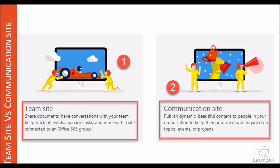Looking at the communication site image, one person is announcing something with achievements shown on screen. This is something you want to share with your organization — dynamic, beautiful content to keep people informed about various achievements, showcases, events, and projects. At that time you go with the communication site. In summary, the team site description reads: share documents, have conversations with your team, keep track of events, manage tasks and more, with a site connected to an Office 365 group. The communication site description reads: publish dynamic, beautiful content to people in your organization to keep them informed and engaged on topics, events, or projects.